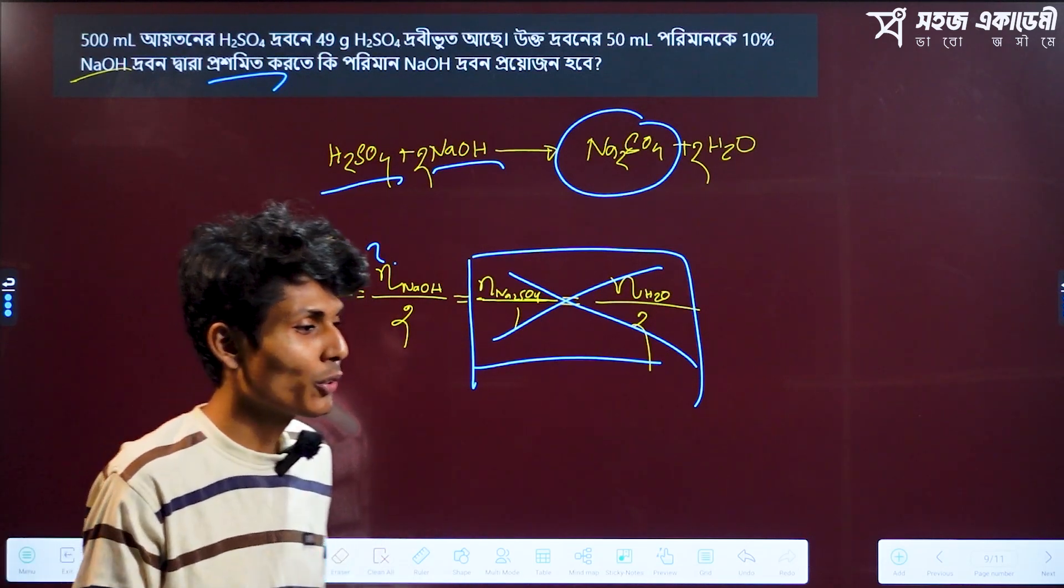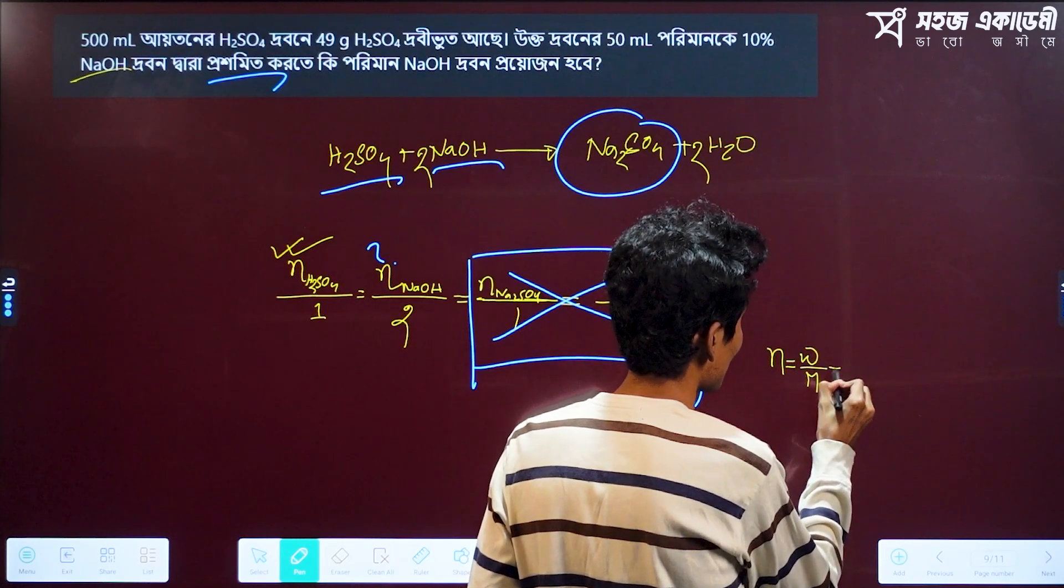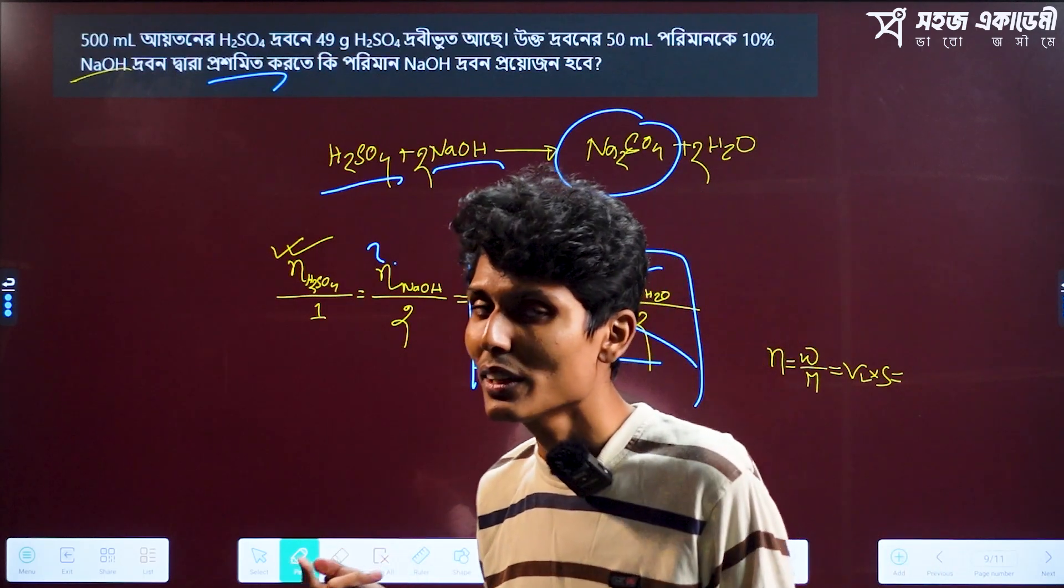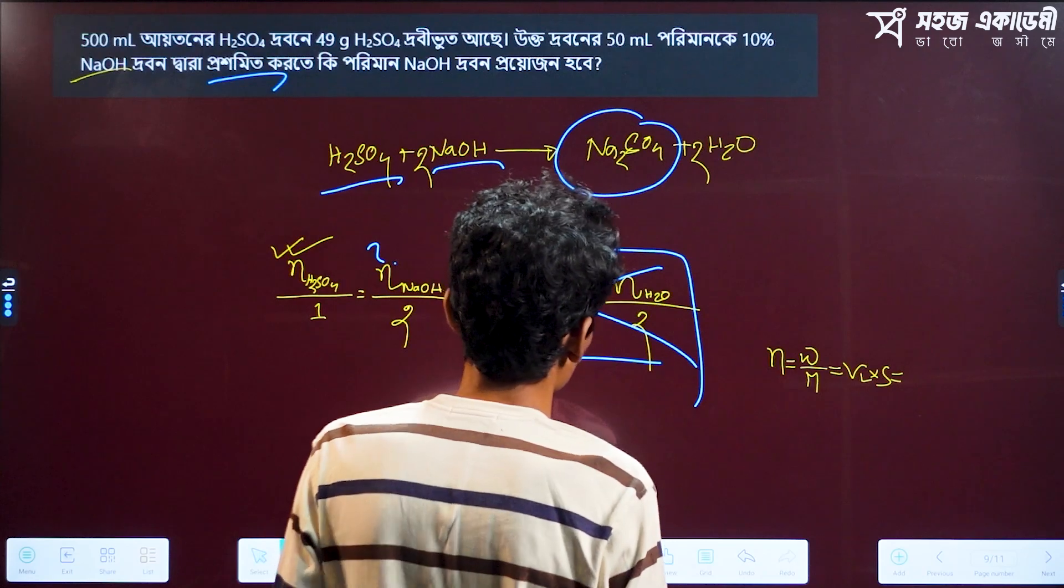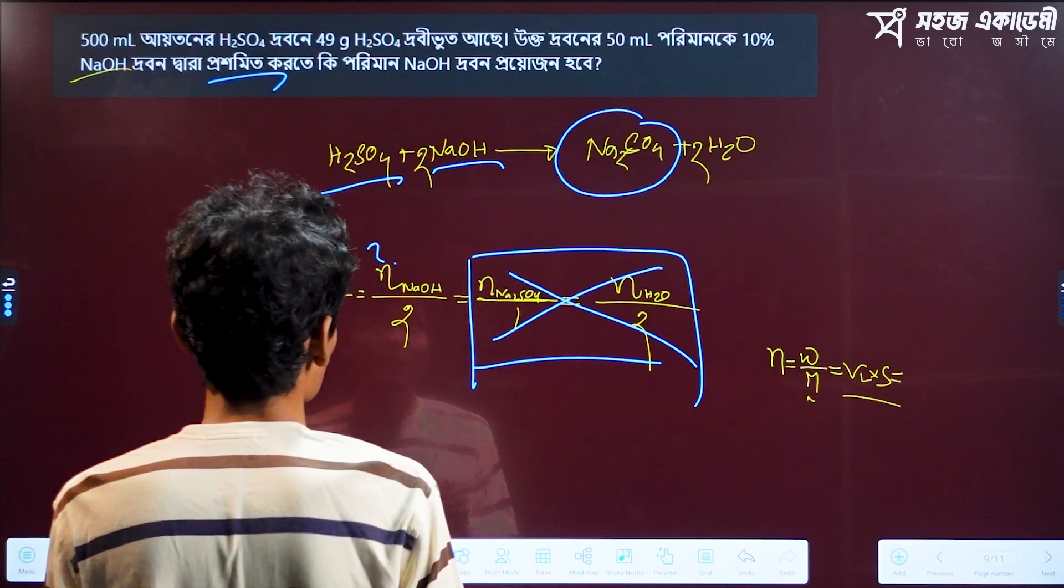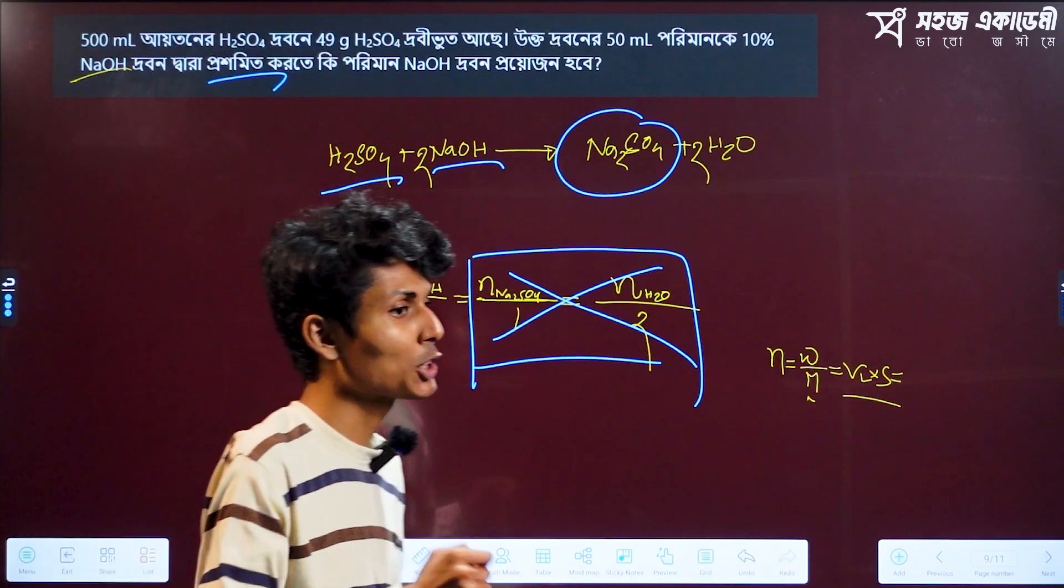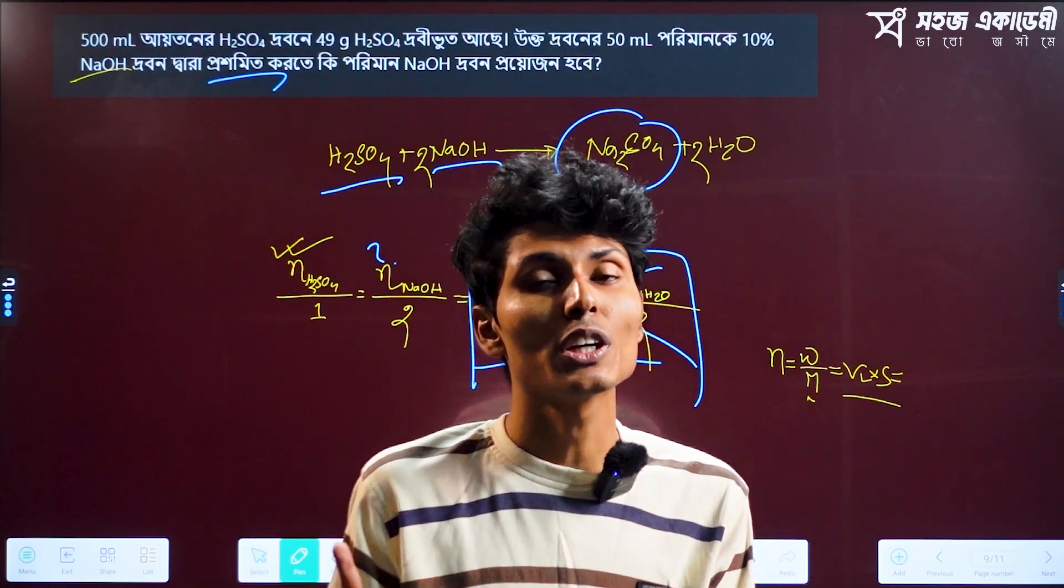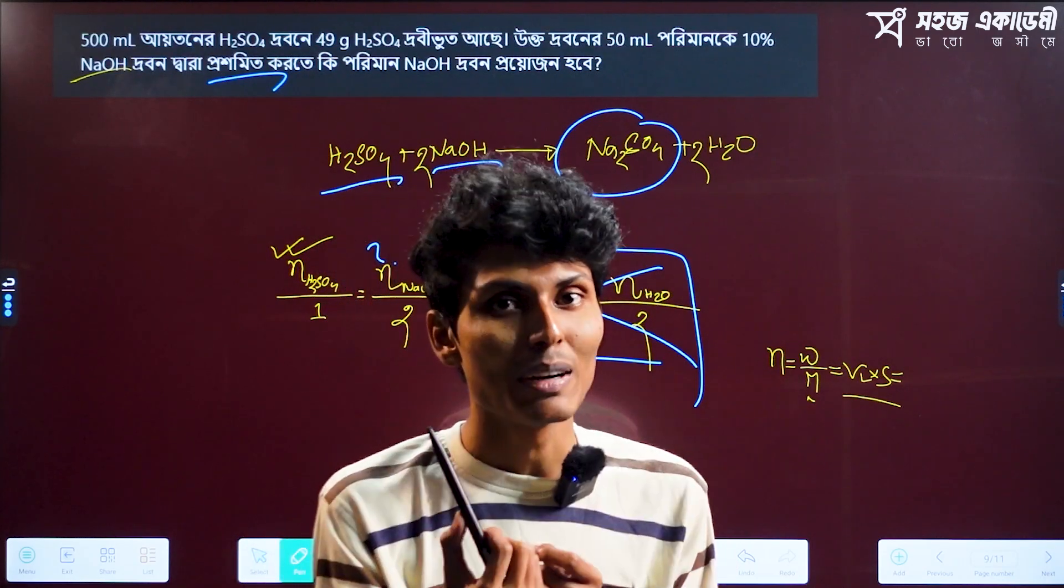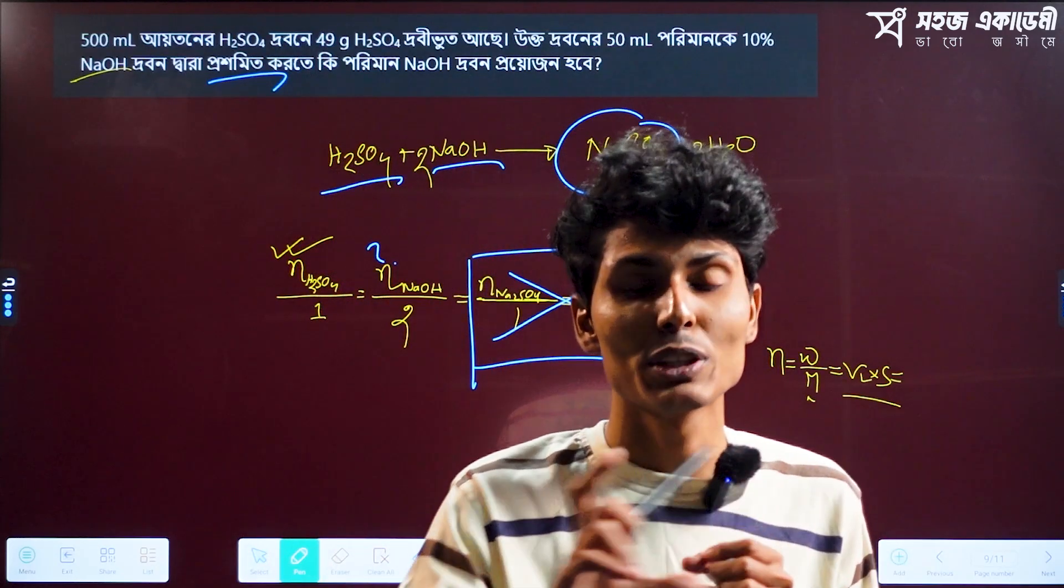So the solution is n of H2SO4. What do you need to do? The reminder is that n equals to W by M or V into S. If you have to do this, you can do this. So the solution is to do this. Just the solution is to do this. Normally, the solution is to do this. What are you going to do? Because if you want to do this, forty-nine grams H2SO4, these are the five hundred grams you can do this. 5.5 grams.